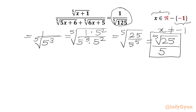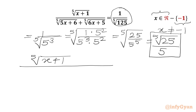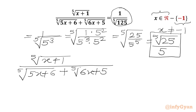Let us write the equation: the 5th root of (x+1) over the 5th root of (5x+6), plus the 5th root of (6x+5), equal to the 5th root of (6x+5). The RHS is the 5th root of 25 over 5.